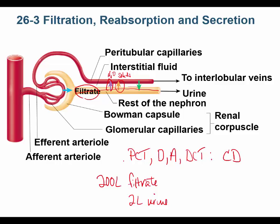We reabsorb solutes like glucose — we always want glucose back in our blood for energy. Not all toxins and waste products are filtered; some remain in the bloodstream. We can secrete those into the filtrate — the green arrow shows secretion. So just because something isn't filtered in the renal corpuscle doesn't mean it has to stay in the bloodstream.